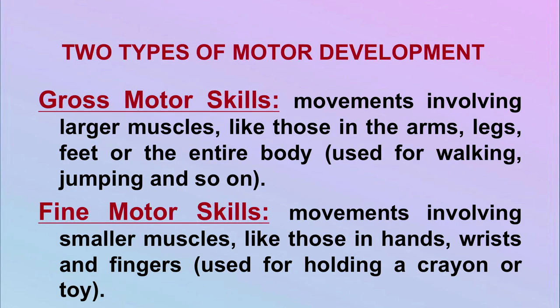There are two types of motor development: gross motor skills and fine motor skills. Gross motor skills involve movements using large muscles like those in the arms, legs, feet, or the entire body — for example, walking and jumping. Fine motor skills involve smaller muscles like those in the hands, wrists, and fingers, which are used for holding a crayon or toy, painting, scribbling, or drawing. Both types of motor skills lead to the complete motor development of the child.